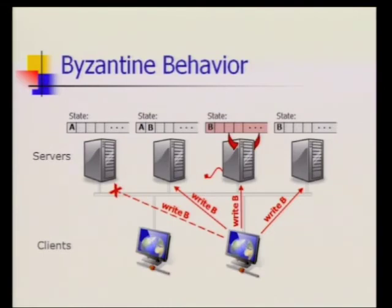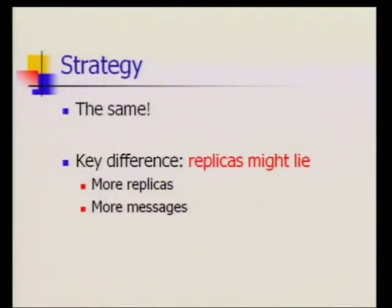Now B comes along and its message doesn't make it to honest node one, but reaches the other three replicas. The problem is one of these is the liar, and the liar pretends that A never happened. A simple majority-rule solution won't work because I have a bad node lying, an honest node that doesn't know anything about A, and one honest node that knows about both. I need a protocol that makes sure honest behavior survives and the bad node doesn't get in the way.